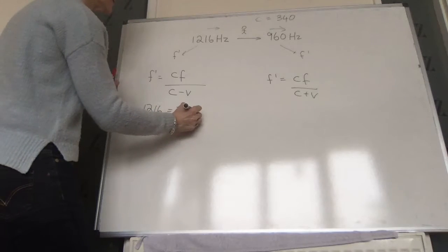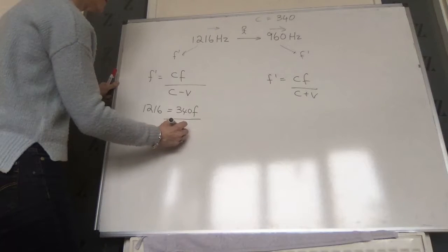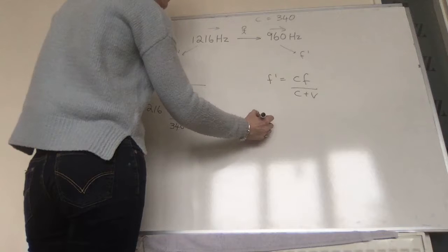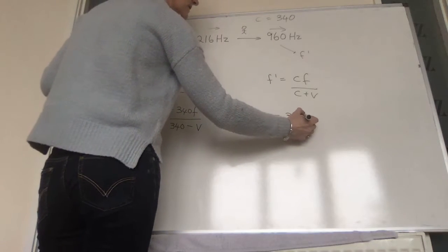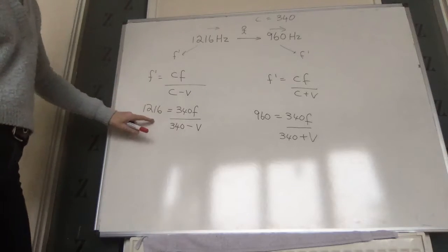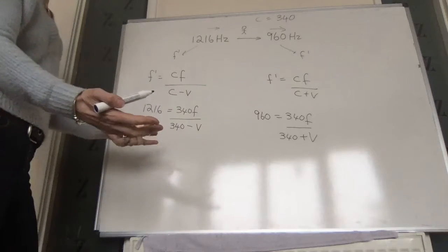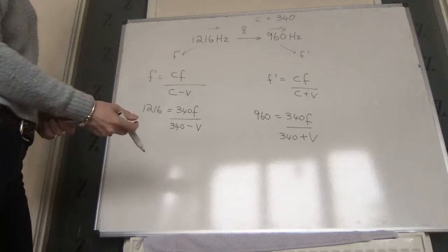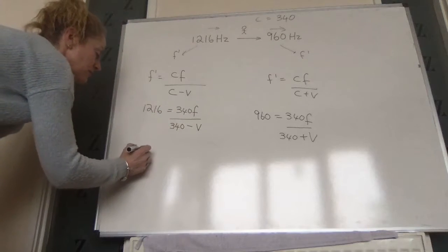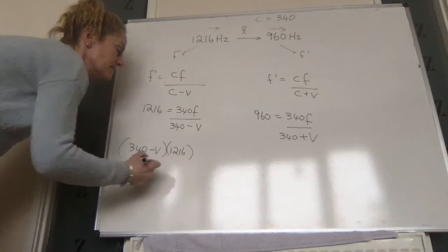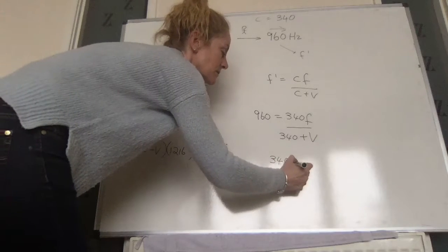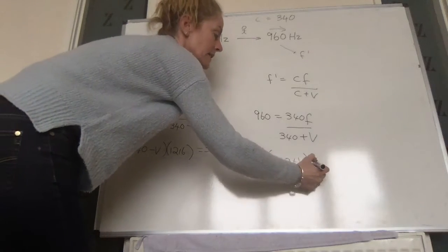Substituting the numbers: 1,216 equals 340 times F over (340 minus V), and 960 equals 340 times F over (340 plus V). We now have two equations and two unknowns. Multiplying across in each equation to eliminate fractions: (340 minus V) times 1,216 equals 340·F, and (340 plus V) times 960 equals 340·F.